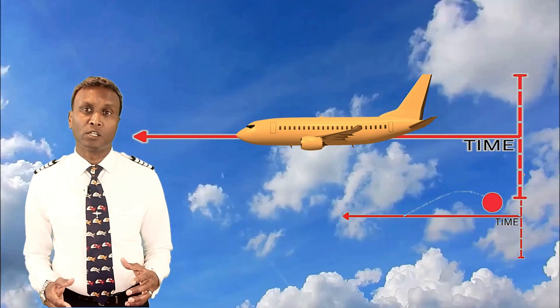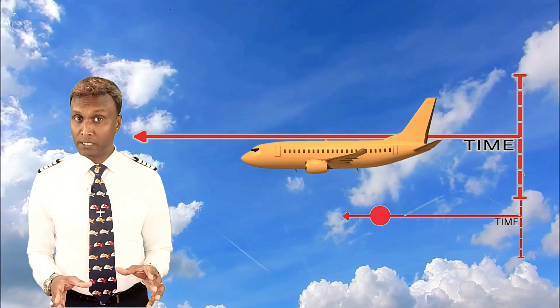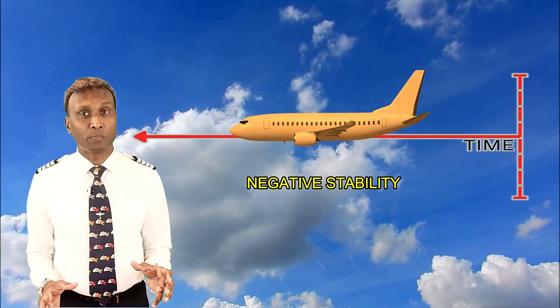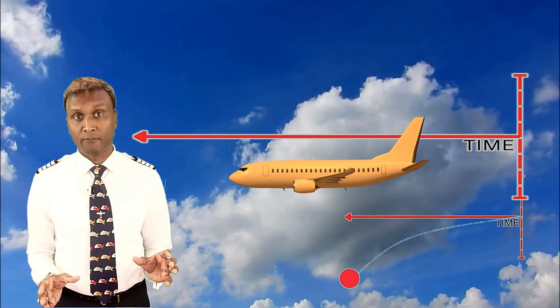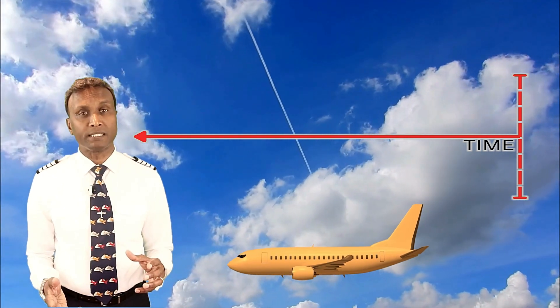Positive stability is self-correcting. An aircraft is considered positively stable if it tends to return to its original state after a disturbance. Most stable aircraft exhibit positive stability. Negative stability displays divergent behavior — an aircraft is negatively stable if it tends to move further away from its original state after a disturbance. Negative stability is generally undesirable and can lead to uncontrollable flight conditions.